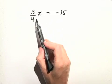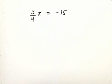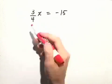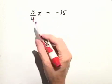The easiest way to solve this is by multiplying both sides of the equation by the reciprocal of that coefficient. The reciprocal of 3 fourths is 4 thirds.